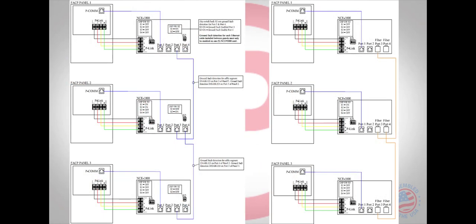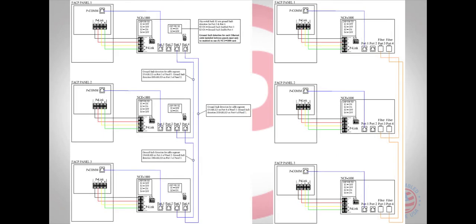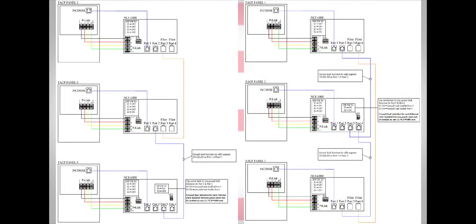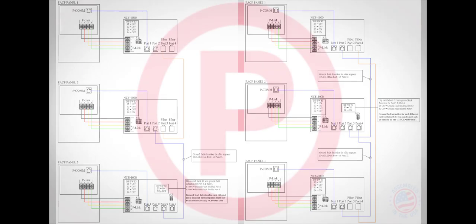Typical installations for these cards could include Class B configurations as seen in these wiring diagrams. The cards can also be installed using true Class A wiring as seen in these wiring diagrams. Note that a network can include a combination of both NCE Ethernet cards and NCF Fiber cards.